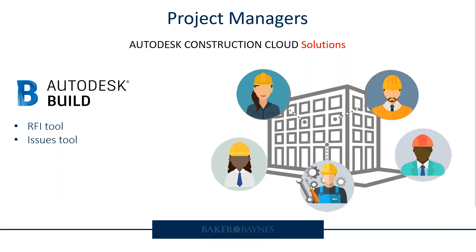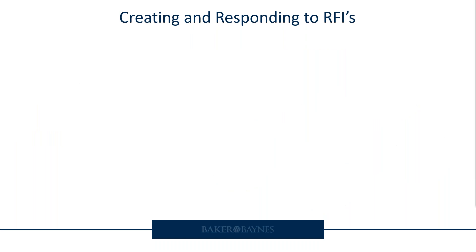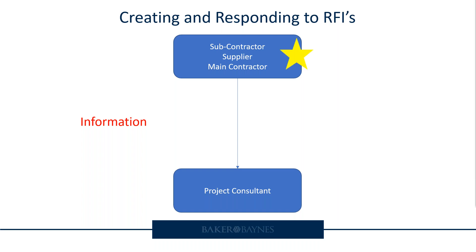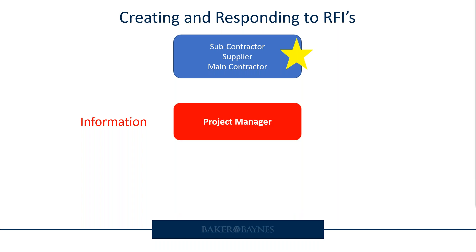To look at how the project manager can typically make use of the RFI tool, it's good to start with where does an RFI typically originate. It starts with the subcontractor, supplier, or main contractor who needs information from a project consultant. The RFI tool in Autodesk Build is only to be used by contractors. For the project manager to use this tool, they can be set up as the RFI manager. The contracting party will create an RFI — a request for information — and assign it to the project manager. The project manager will then review and validate the RFI, and if satisfied, submit it to the relevant consultant. That consultant will then review and respond to the RFI.